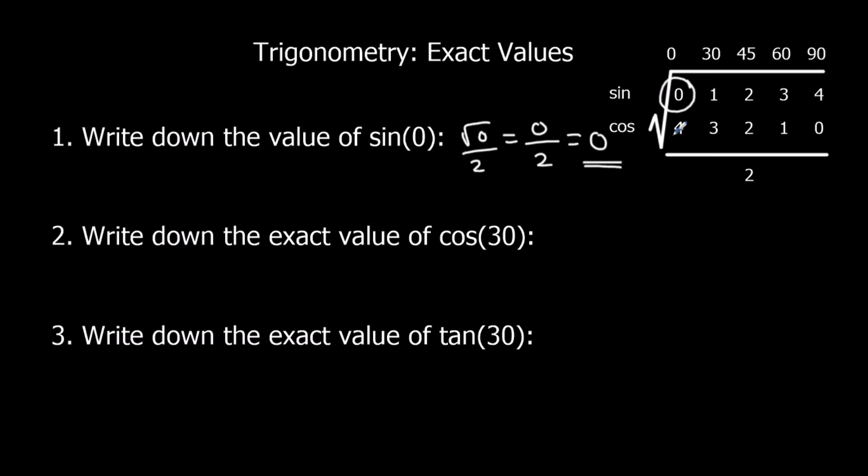Cos 30 is square root 3 over 2. We can't simplify it, so that's how we leave it.